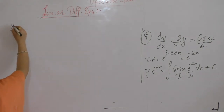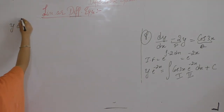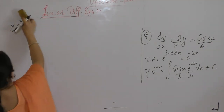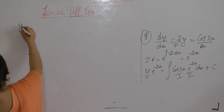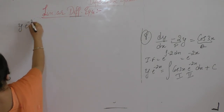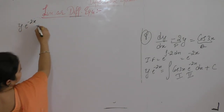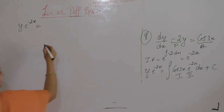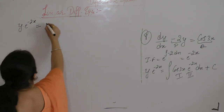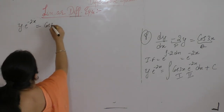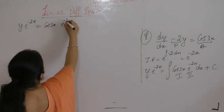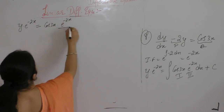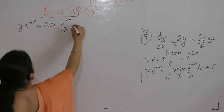y into e^(−2x) is equals to: first function as it is, times integral of second function — integral of second function is e^(−2x) / (−2).